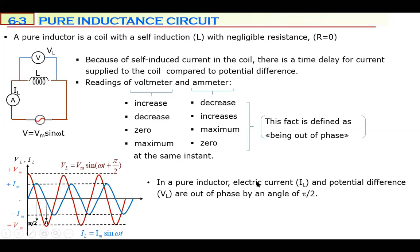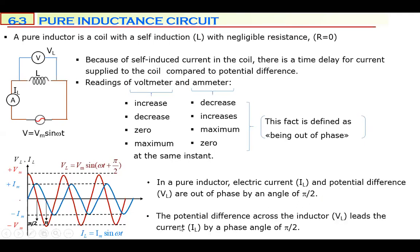In a pure inductor, electric current is late — it lags — while potential difference is leading. So electric current IL and potential difference VL are out of phase by a phase angle of π/2. A full cycle is 360°, a half cycle is 180°, and a quarter cycle is 90°, which equals π/2 radians. We say VL leads the electric current by a phase angle of π/2.